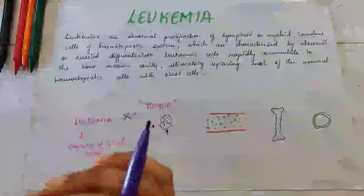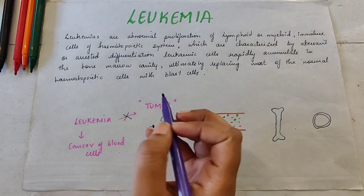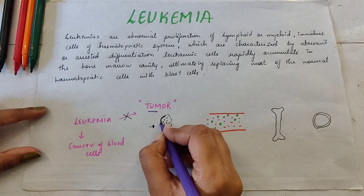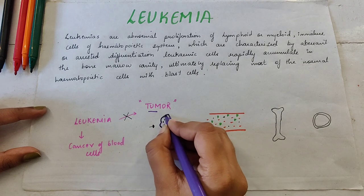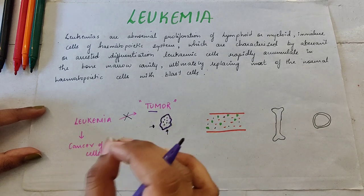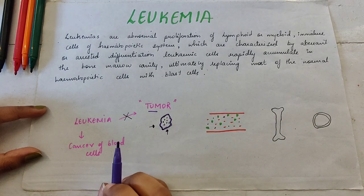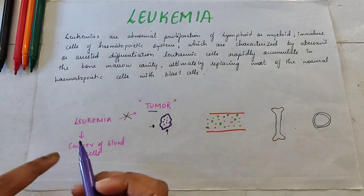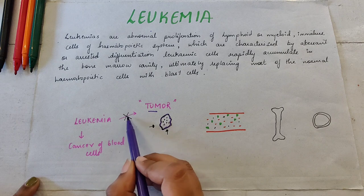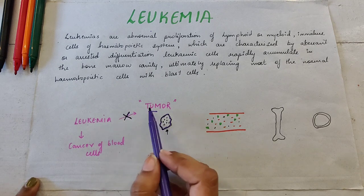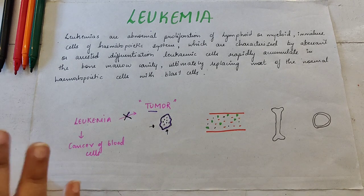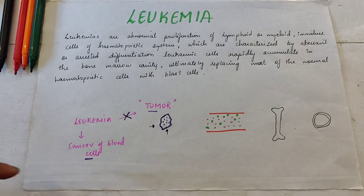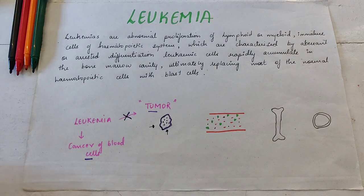Whenever you hear the term cancer, you mainly think of a tumor — there is a tumor and that is what resembles cancer in a local way. But leukemia is confusing in that matter because in leukemia there is no tumor. Basically, leukemia is cancer of blood — the blood cells.